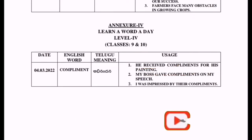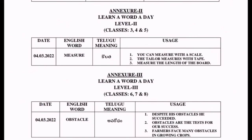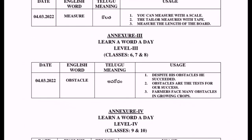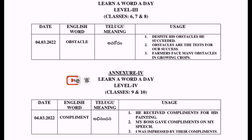Finally, let's repeat all new words once again. Level 1 — first and second class students: T-A-P, tap, meaning 'pumpu.' Level 2 — third, fourth, fifth class students: MEASURE, meaning 'kolata.' Level 3 — sixth, seventh, eighth class students: OBSTACLE, meaning 'avarodham.' Level 4 — ninth and tenth class students: COMPLIMENT, C-O-M-P-L-I-M-E-N-T, meaning 'abhinandana.' Thank you for watching.